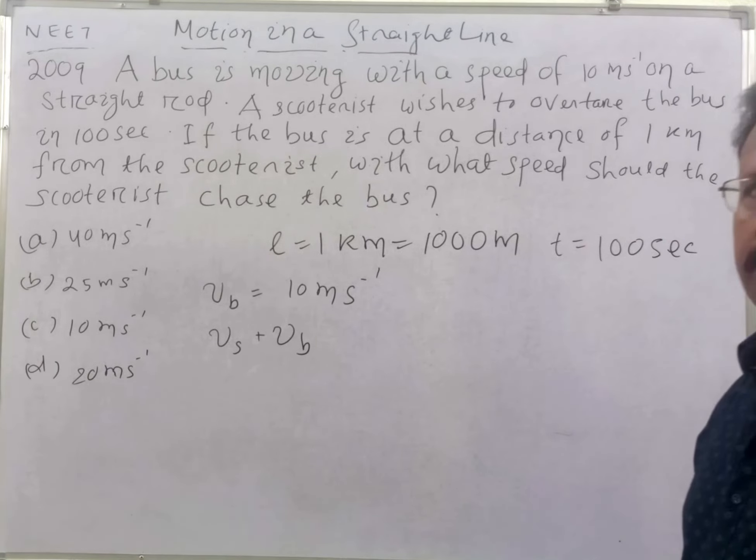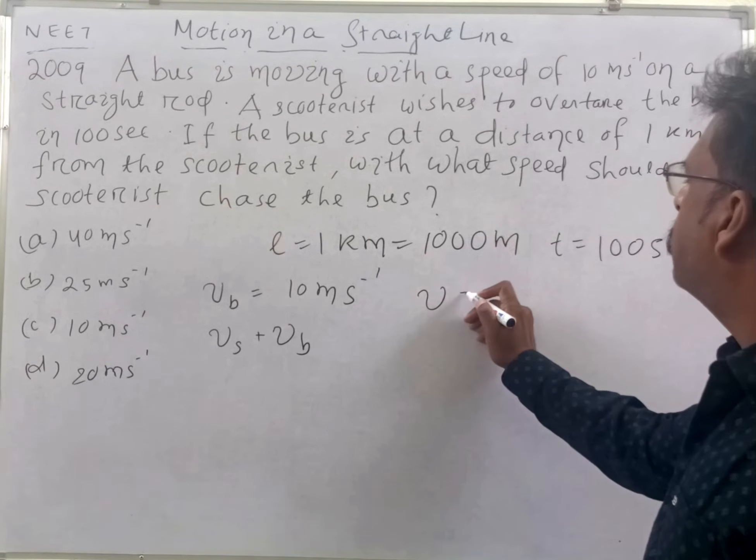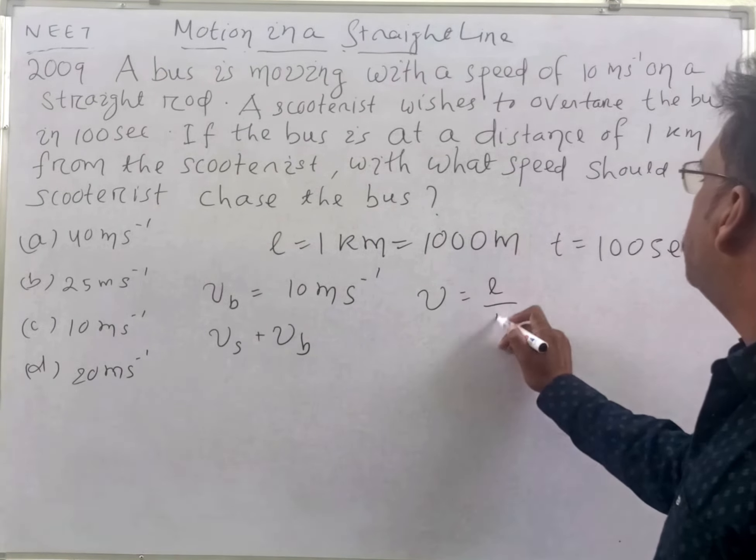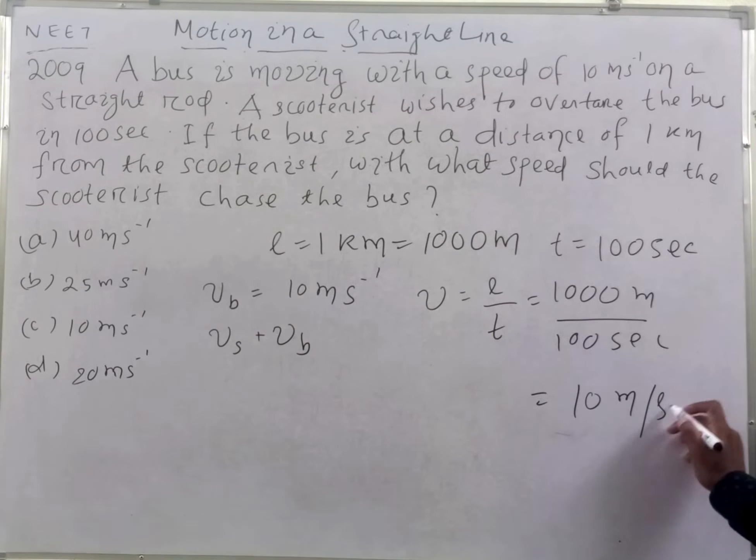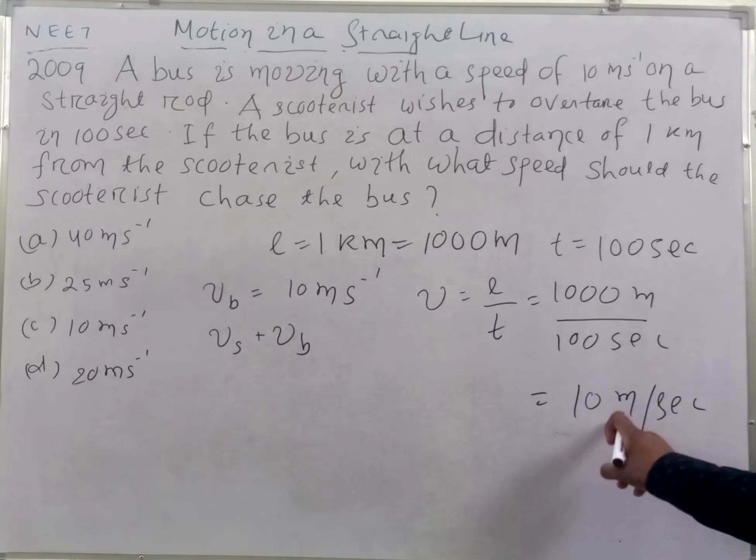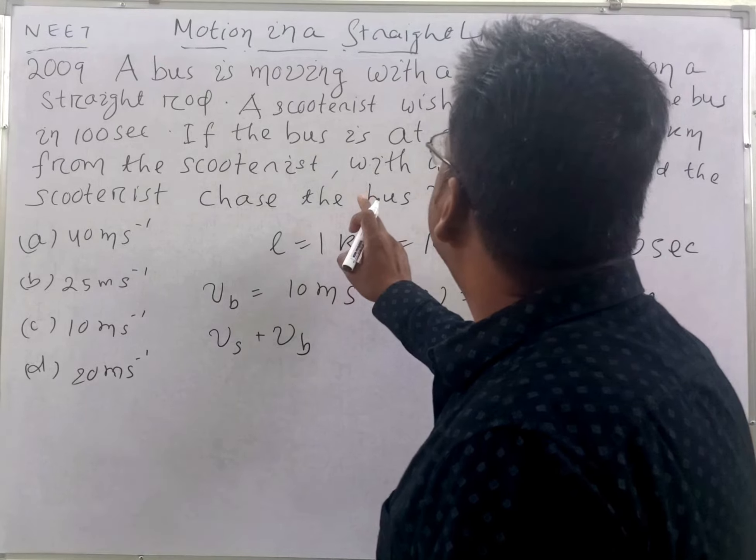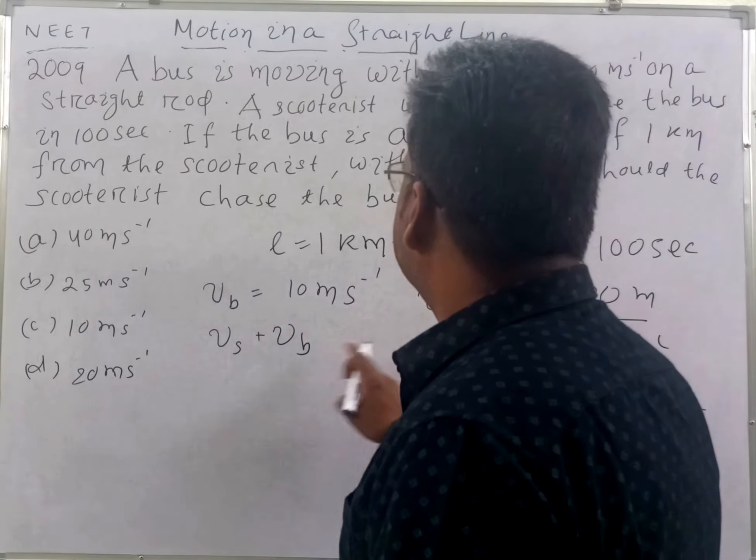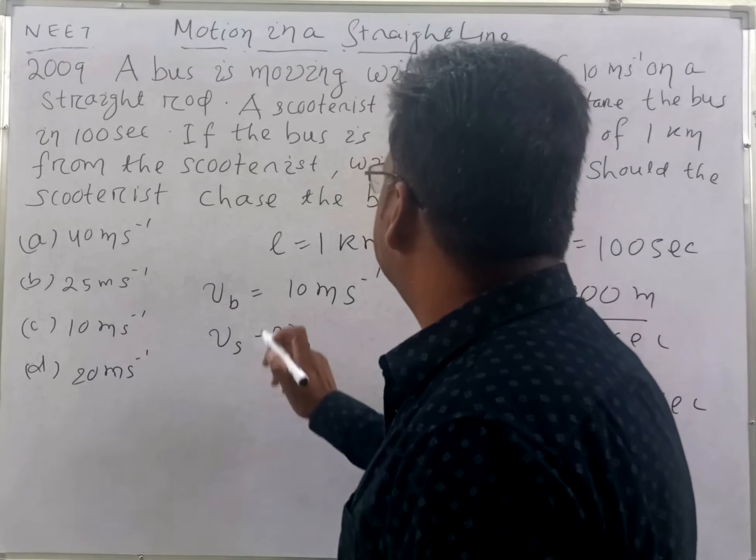We need to know the velocity. What is the formula for velocity? That is equal to L by T. 1000 meters divided by 100 seconds gives us the relative velocity needed. Vb is 10 meters per second.